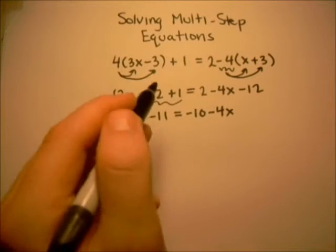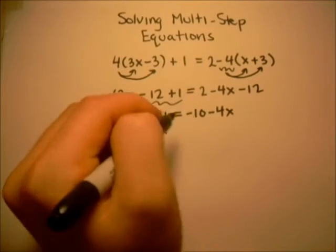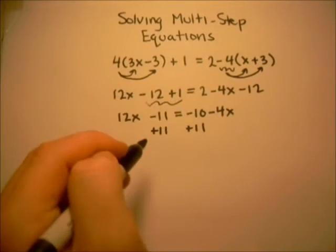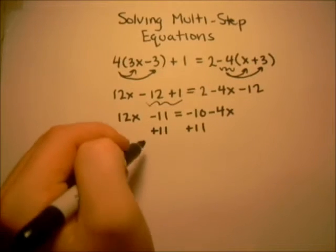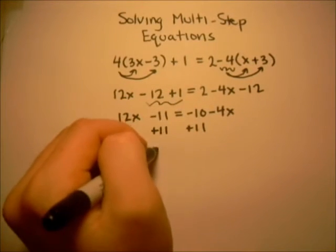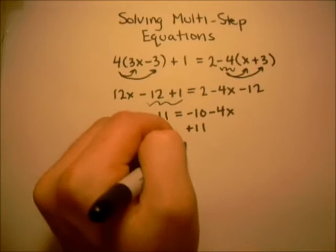Now we want to get everything without an x on one side, so we'll add 11 to both sides. And that gives us 12x equals negative 10 plus 11, that's 1, minus 4x.